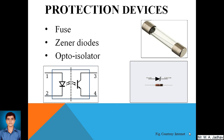The protection devices we will go through are fuses, zener diodes, and opto-isolators. A fuse is used to protect the circuit from high current — if the current goes beyond the rated value, the fuse will break or open the circuit. Zener diodes and opto-isolators are used for protecting the circuit from high voltages.